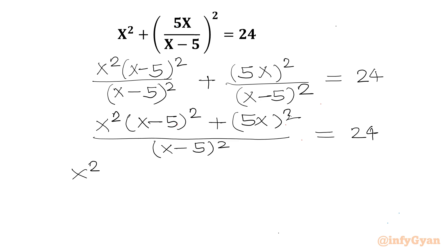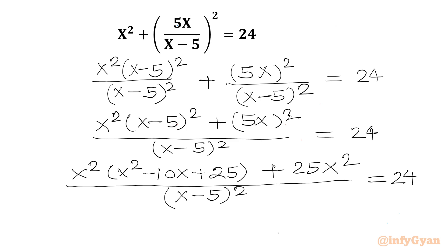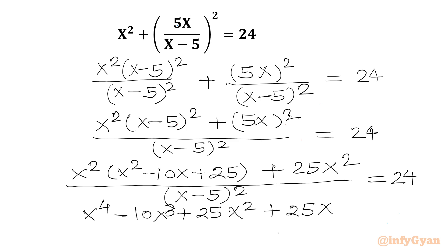Now I will apply the (a - b)² formula. So x² minus 10x plus 25, plus (5x)² which is 25x², divided by (x - 5)², equals 24. Now I will expand: x⁴ minus 10x³ plus 25x² plus 25x², divided by (x - 5)², equals 24.